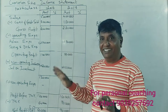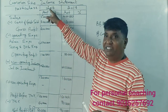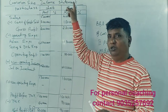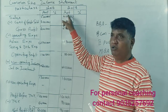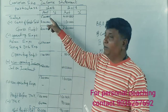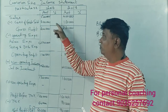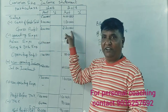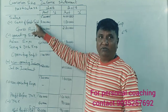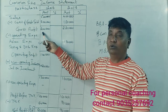In the Common Size Income Statement, for 2016 we have an amount and a percentage, and in 2017 we have an amount and a percentage. The net sales is 5 lakhs, and we have cost of goods sold. Now we calculate the gross profit: 5 lakhs minus 3 lakhs equals 2 lakhs.